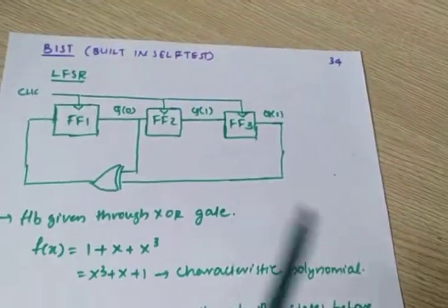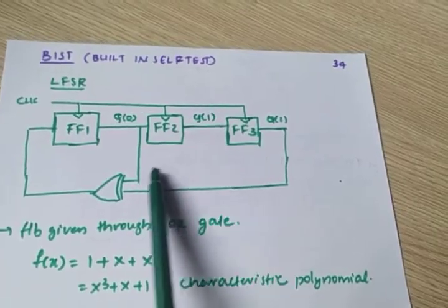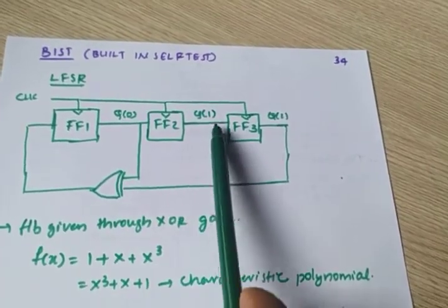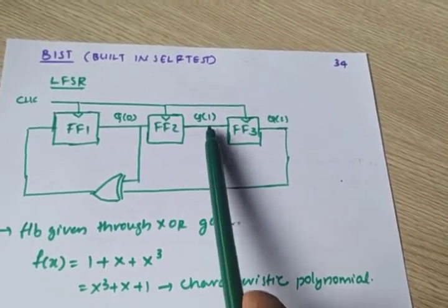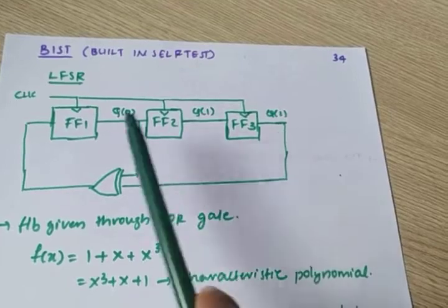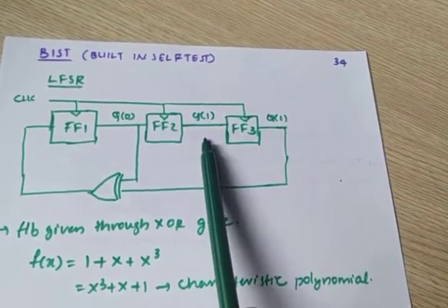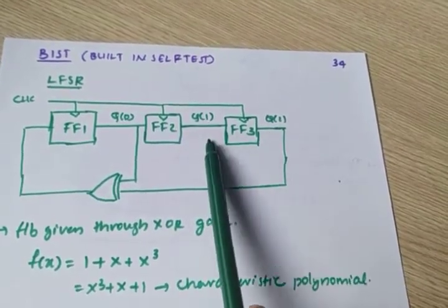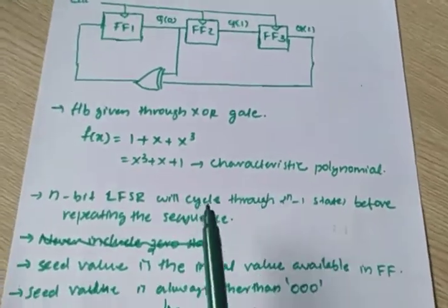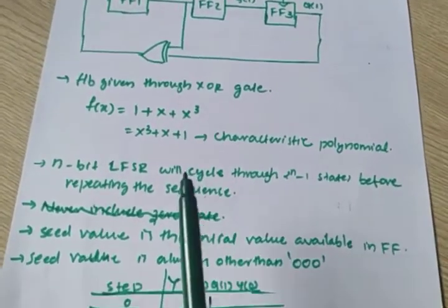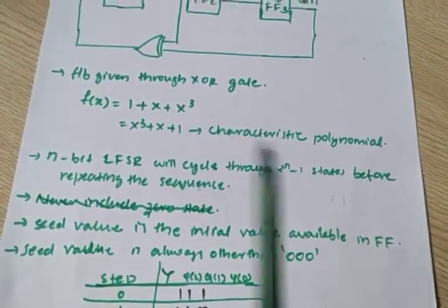If instead we take the connection from a different point, we can write it as 1 + X² + X³. That is the alternative polynomial characteristic equation.